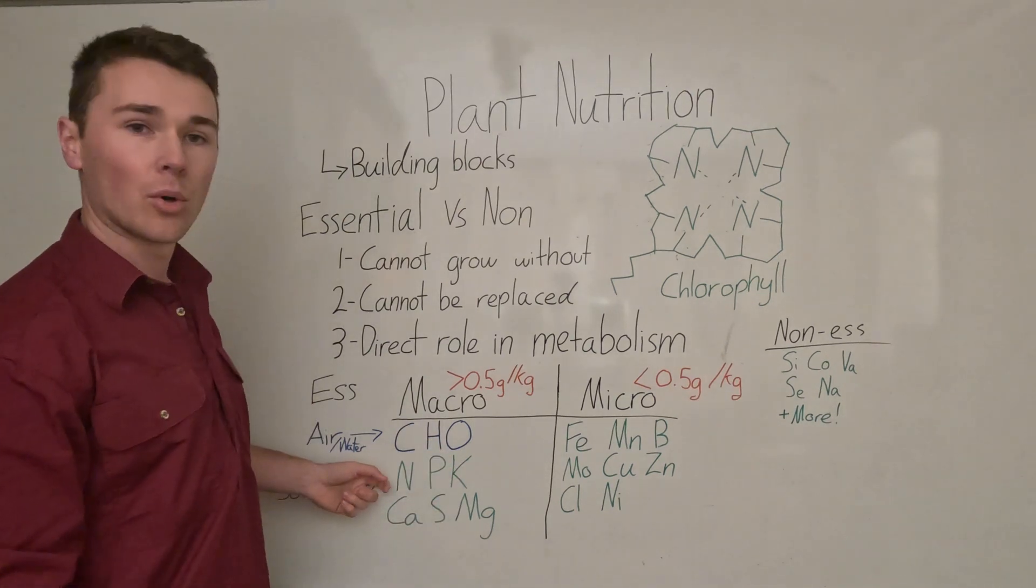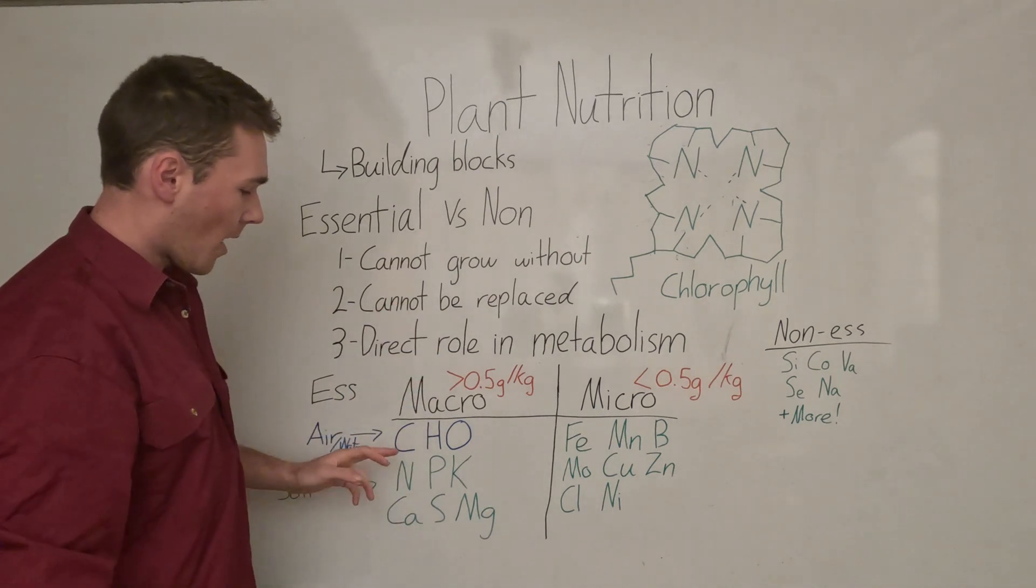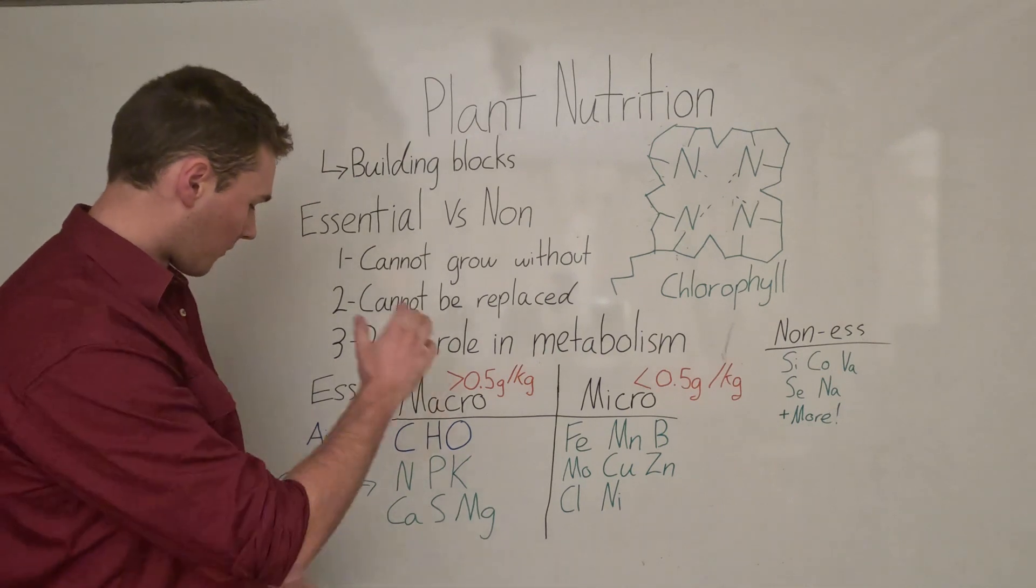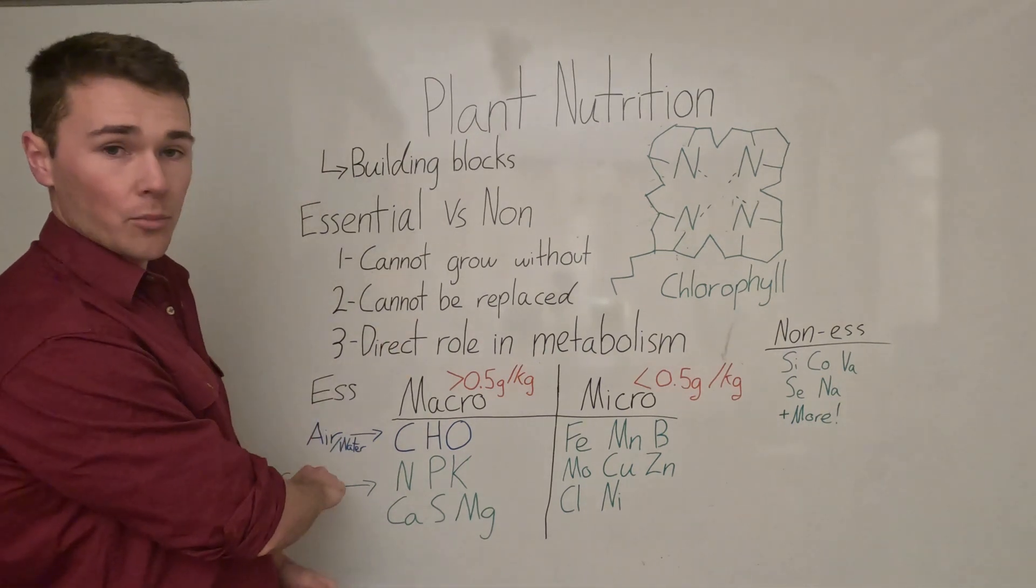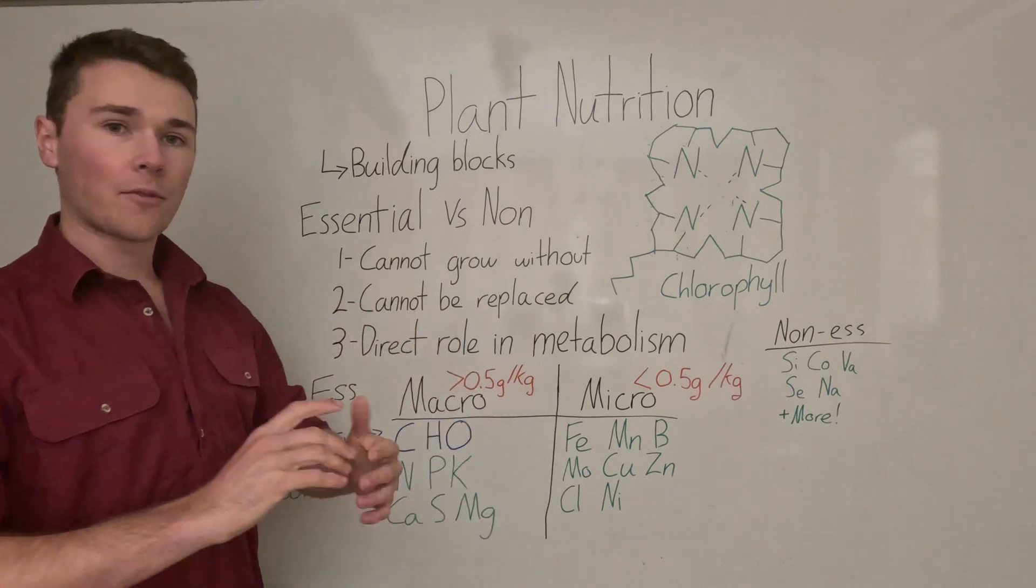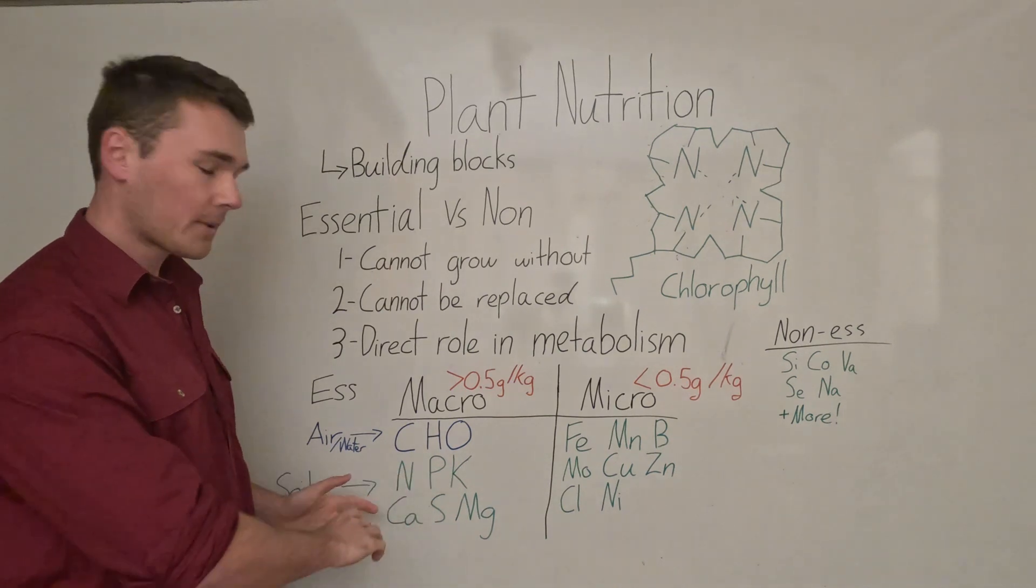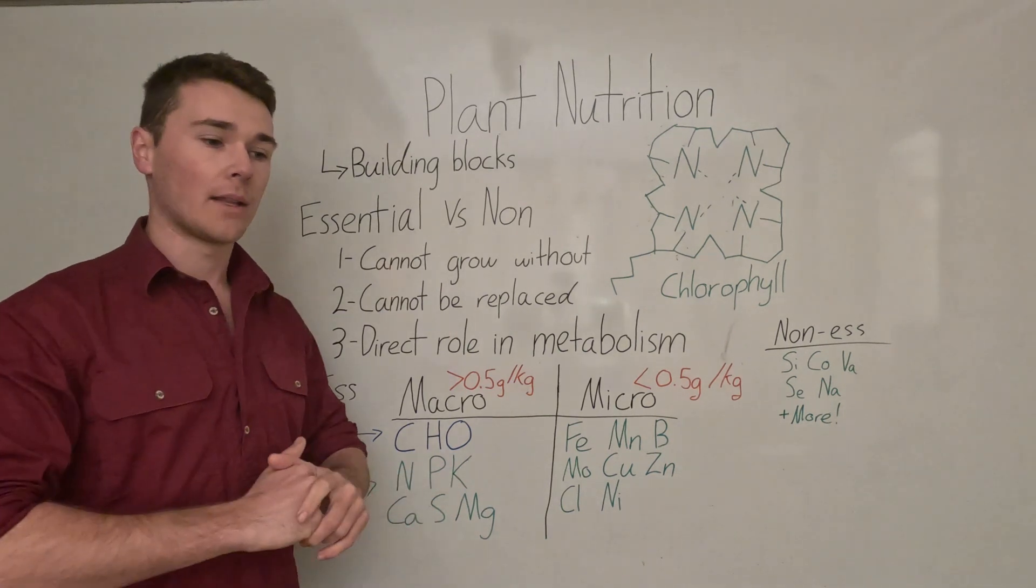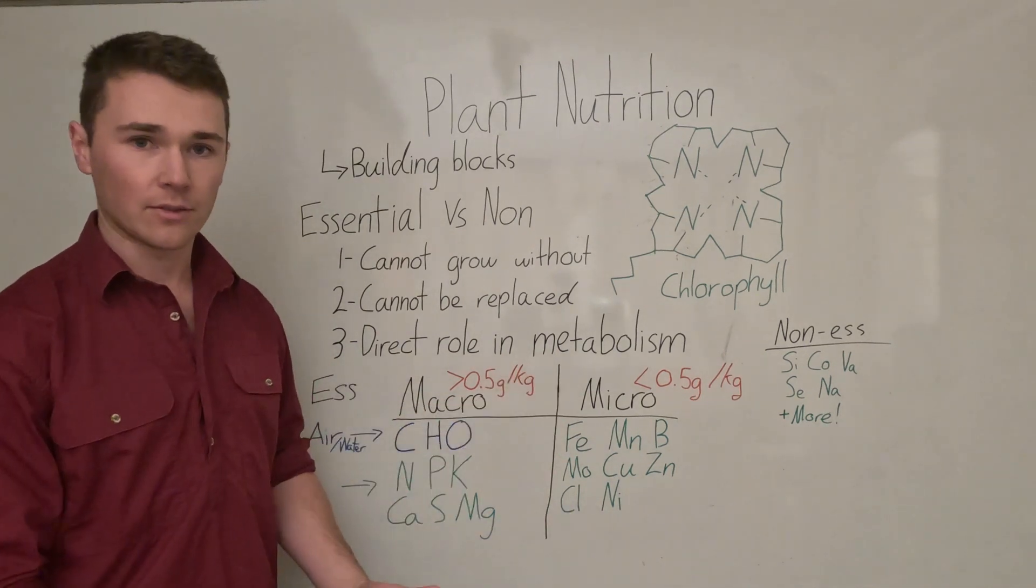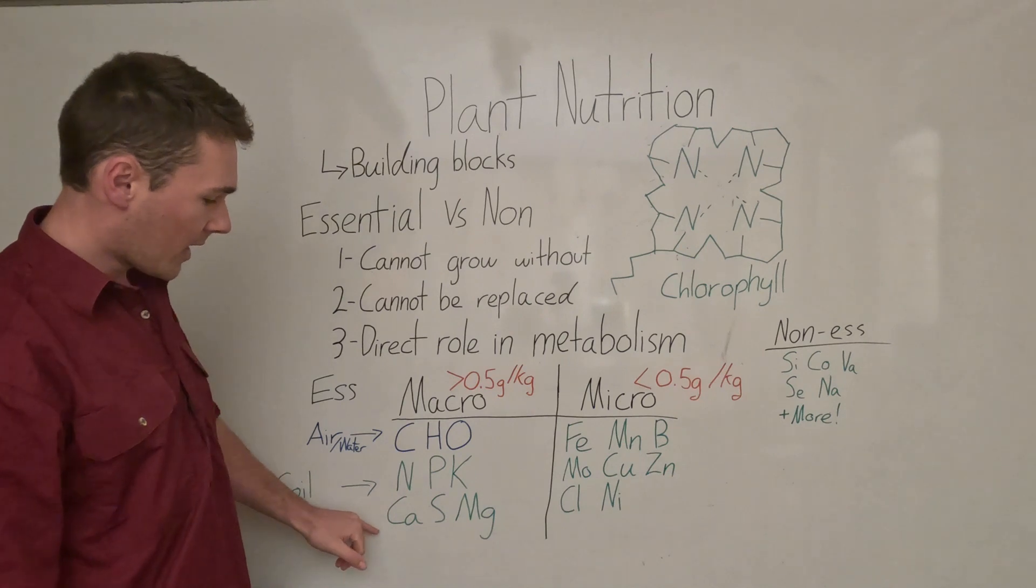On our macro side we've got carbon, hydrogen, oxygen - not many people think of these as nutrients but they are nutrients, they get them from the air and the water, very important, these actually make up the majority of the plant. Then from our soil, our macros from the soil, we have nitrogen, phosphorus, and potassium. Typically these are the nutrients that are applied in the most amounts - NPK, basically on every single fertilizer label. Next we have calcium, sulfur, and magnesium.